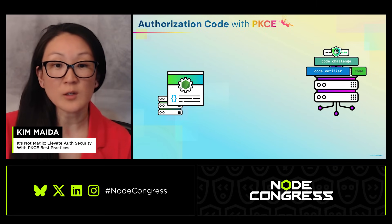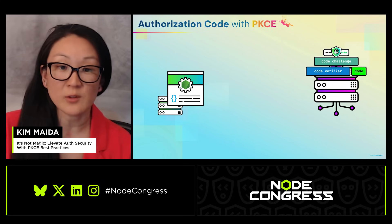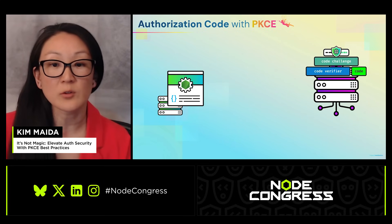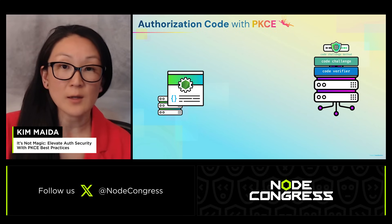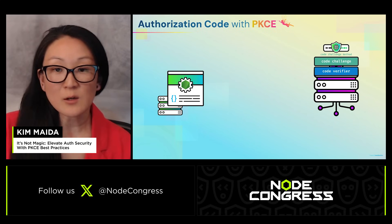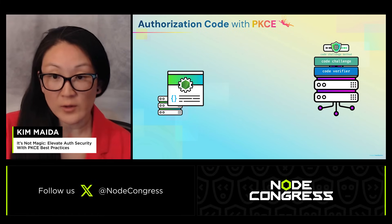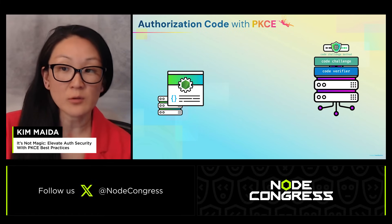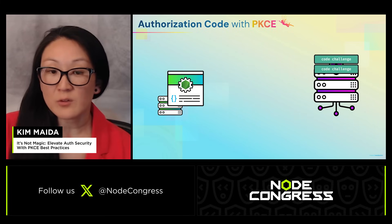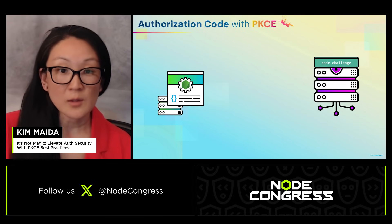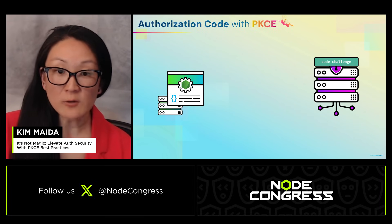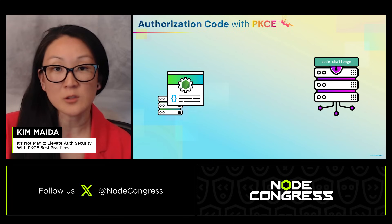The authorization server confirms that the code is the same code it sent in response to the app's authorization request — the one that was delivered to the app in the query string. The authorization server also has the code verifier, which is the random string generated by the client at the beginning of this process. Remember, we sent the code challenge — which is the hashed code verifier — and the code challenge method from the app to the authorization server when we issued the authorization request. This means the authorization server has everything it needs to hash the code verifier with the code challenge method itself. It does so, and then compares its freshly computed code challenge to the code challenge the app sent earlier.